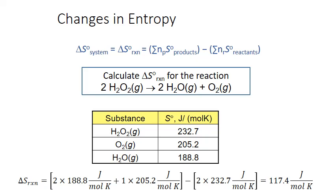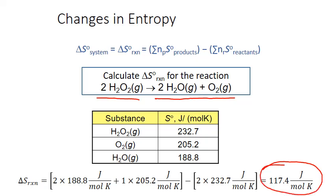This positive change in entropy indicates that entropy increases from reactants to products. Looking at the balanced chemical equation, we can predict this: we go from 2 moles of gas (hydrogen peroxide) as reactants to 3 moles total — water and oxygen gas — on the product side. There is a greater dispersal of matter and more microstates possible for the products than the reactants, and we see that reflected in the positive standard entropy change we calculated.